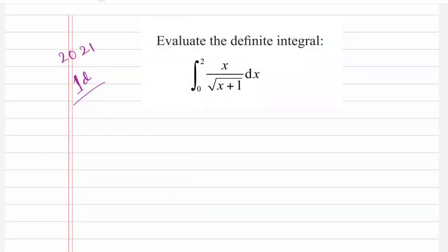Let's do this 2021 scholarship question today. It says: evaluate the definite integral from 0 to 2 of x over root(x+1) dx. When we look at this question, we should be able to identify that we will have to use the substitution method here.